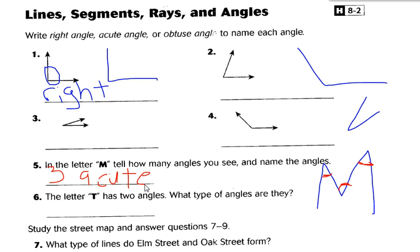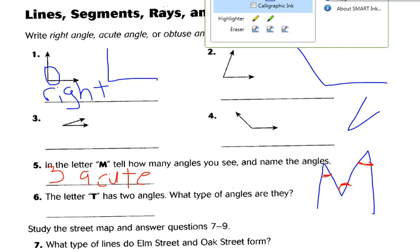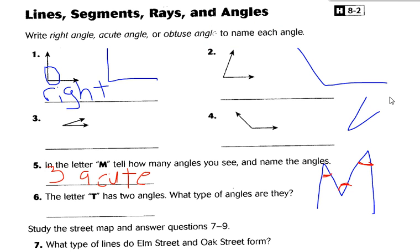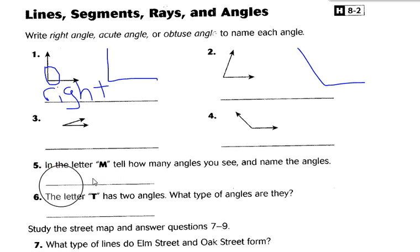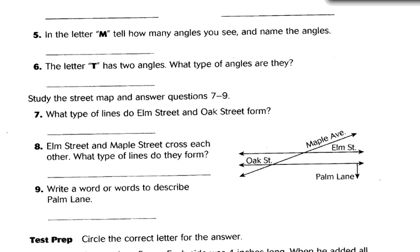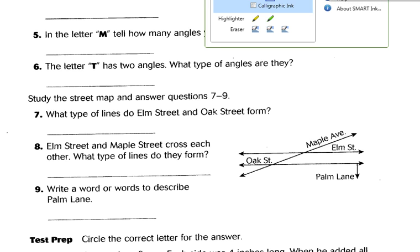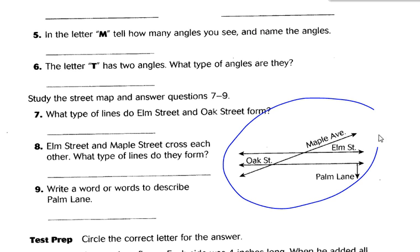And then I'm going to do number six from seven. I already gave you number one. I gave you number five already. I'm going to do number seven for you. I need to use this diagram here. I need to use this. It says what type of lines do Elm Street and Oak Street form? So here's Oak Street.